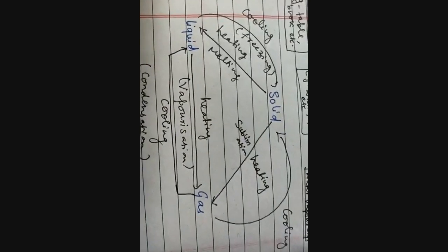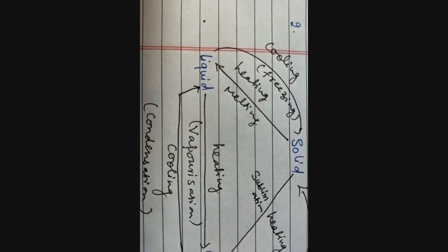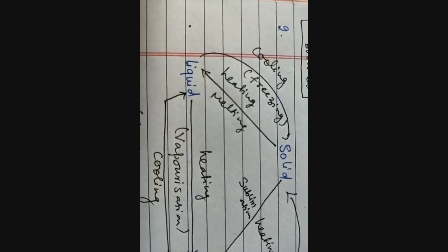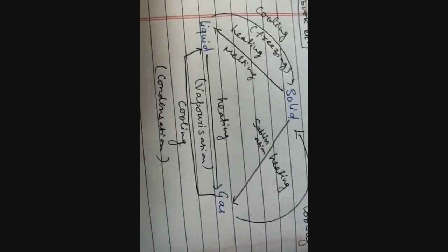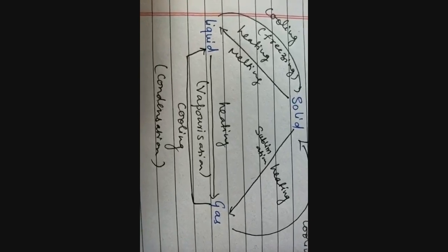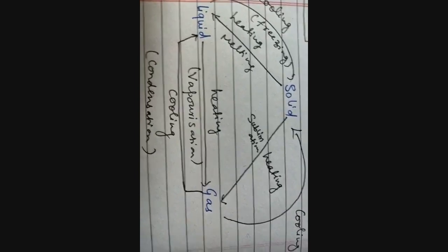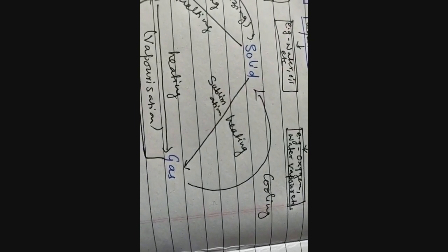For the second flowchart, changes in state of matter: solid — heating (melting) → liquid; liquid — cooling (freezing) → solid; liquid — heating (vaporization) → gas; gas — cooling (condensation) → liquid. Also draw a direct arrow from solid to gas labeled sublimation by heating, and from gas back labeled cooling.